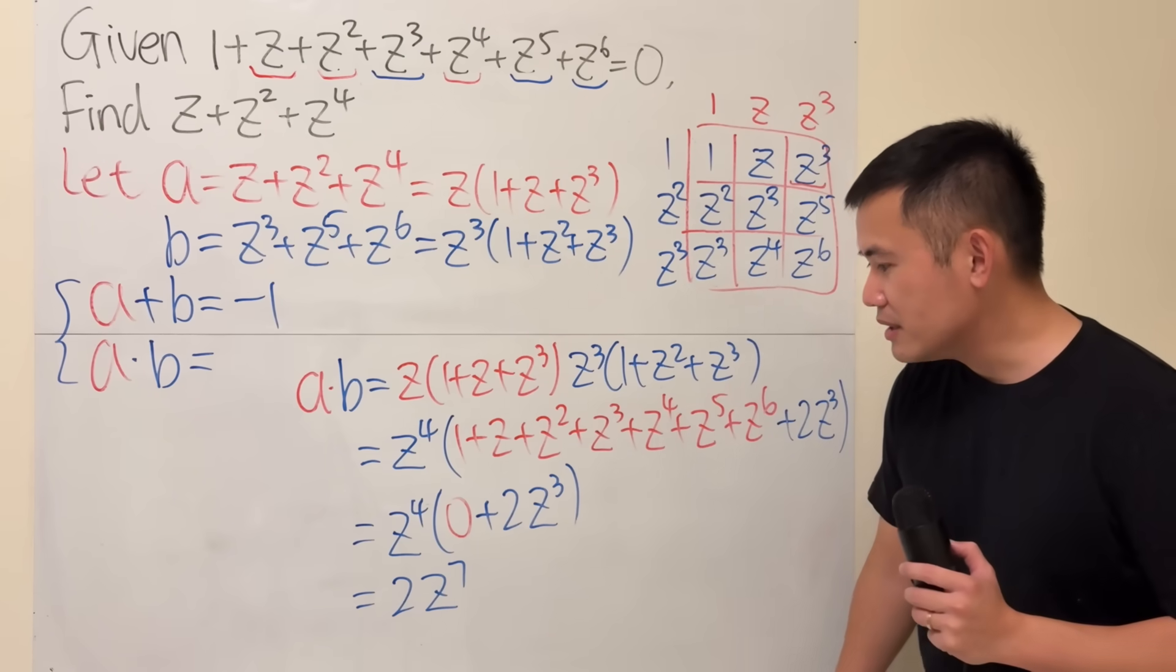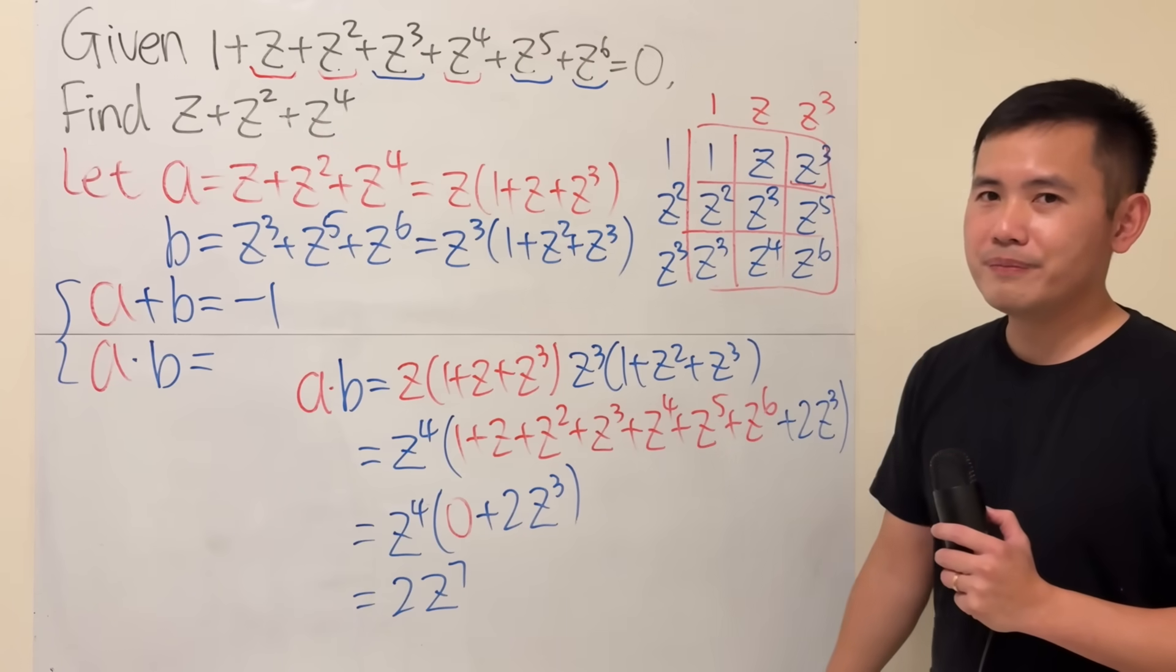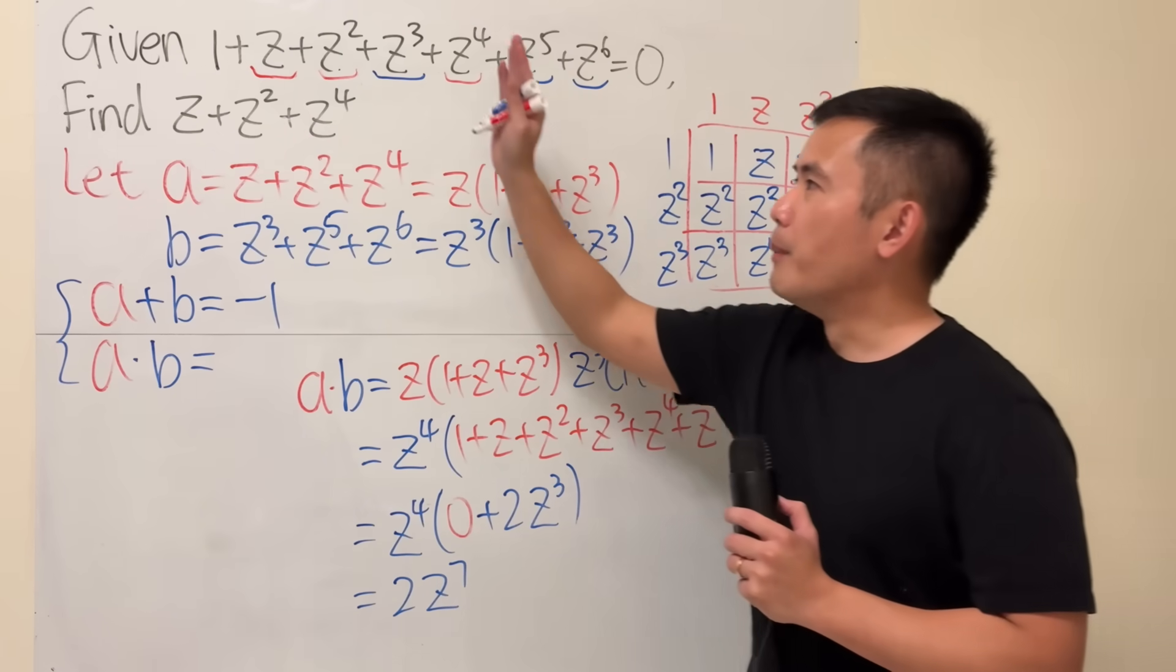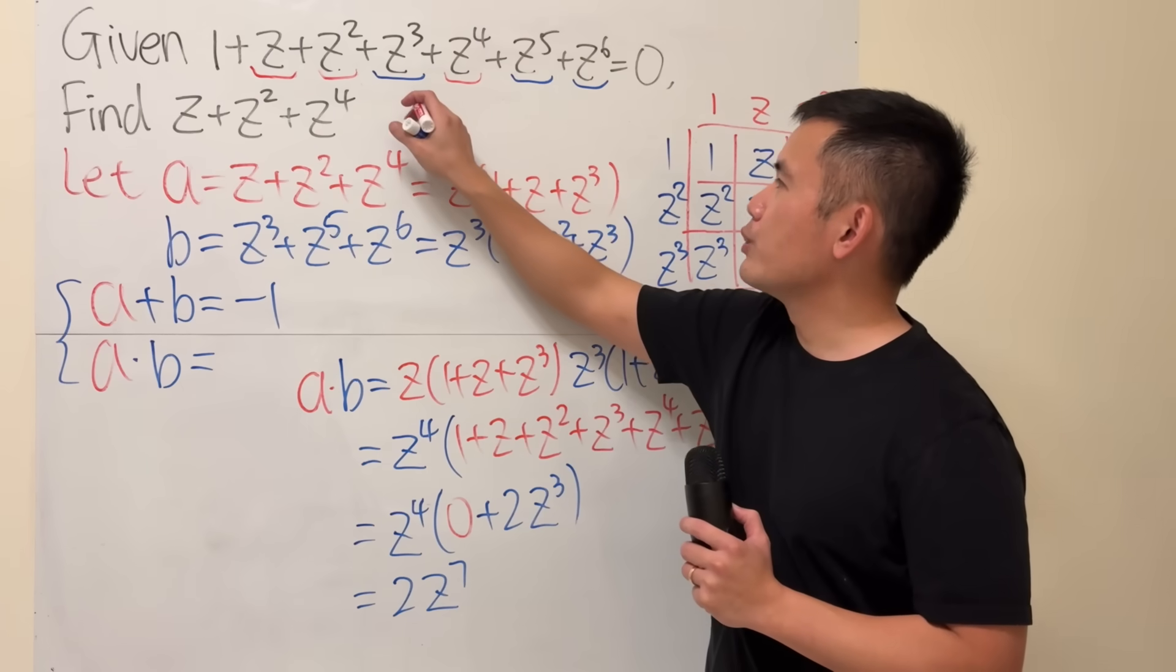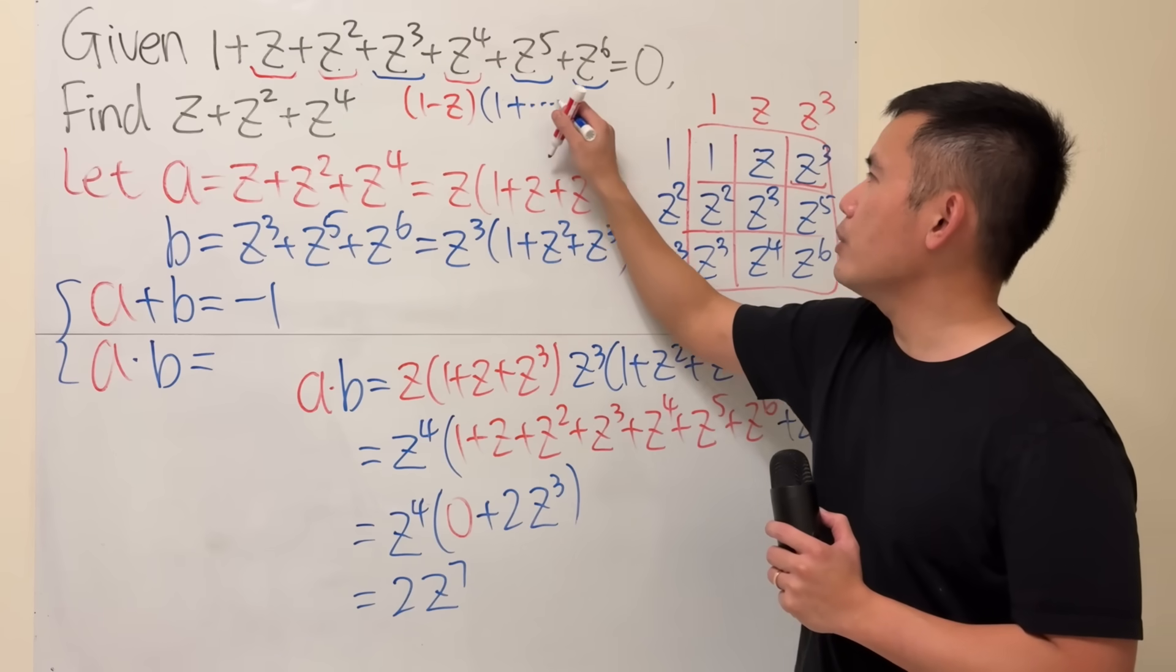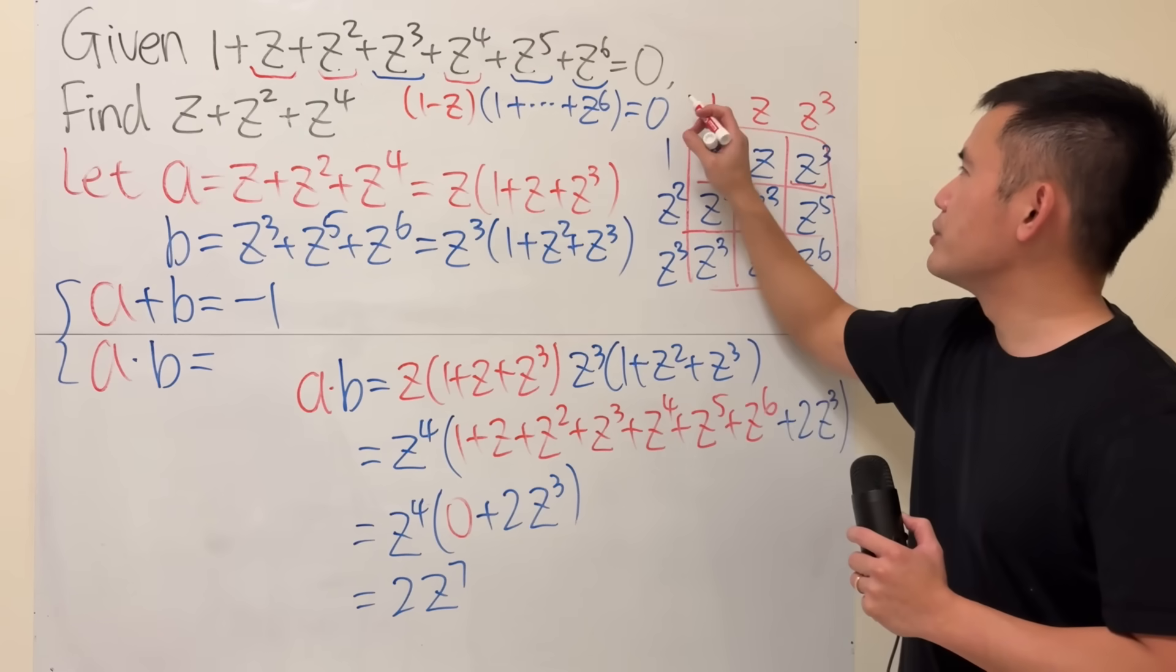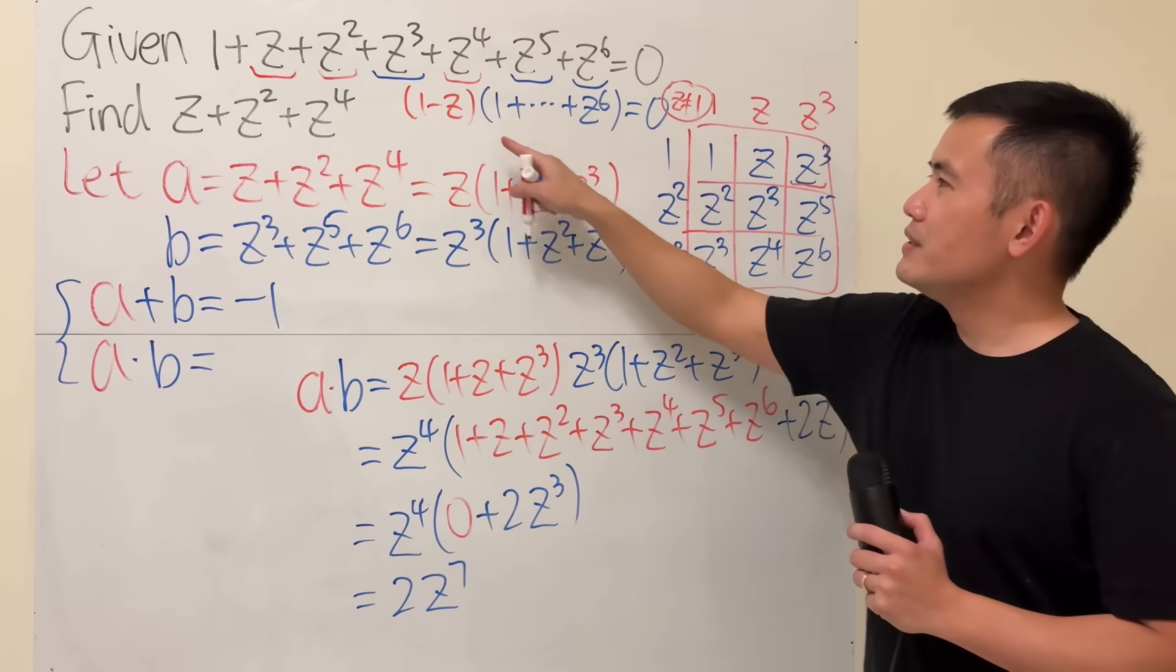But the problem is, from here, how in the world can we figure out z to the seventh power? Well, check this out. 1 all the way to z to the sixth power. What we are going to do is multiply both sides by 1 minus z to the first power. So I'm going to write down 1 minus z times the original, which is just 1 plus all the way up to z to the sixth power. 1 times 0 is just 0, so it doesn't matter. And then technically, I should mention that right here, z is not equal to 1.